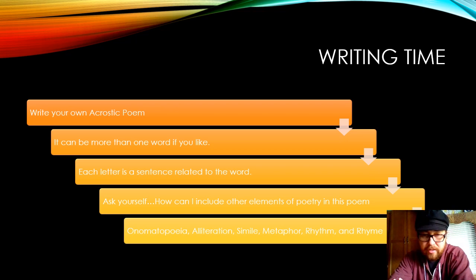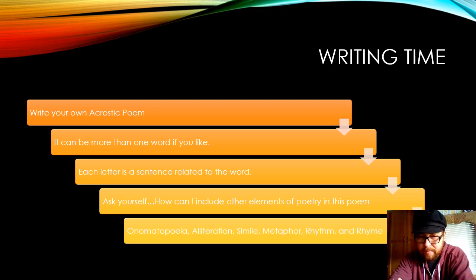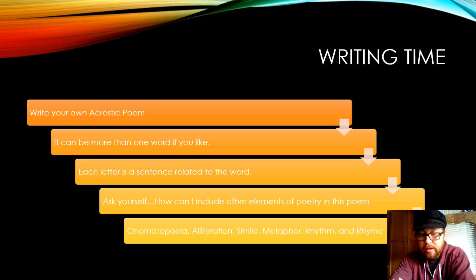Ask yourself: how can I include other elements of poetry in this poem? This is important because we've been learning about so many cool elements of poetry, and it would be great if you can include those things in your poem. Such as onomatopoeia — sounds. Alliteration — repeating the same letter over and over again but maybe with different words.